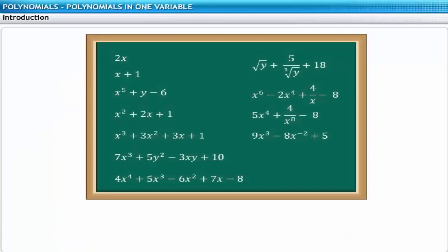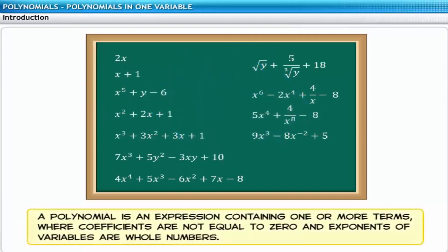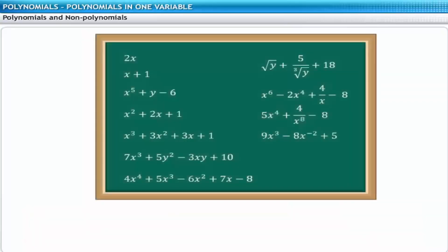Look at the expressions on the screen. Can you identify the polynomials in the set of expressions? A polynomial is an expression containing one or more terms where coefficients are not equal to zero and exponents of variables are whole numbers. A polynomial can have one or more variables.